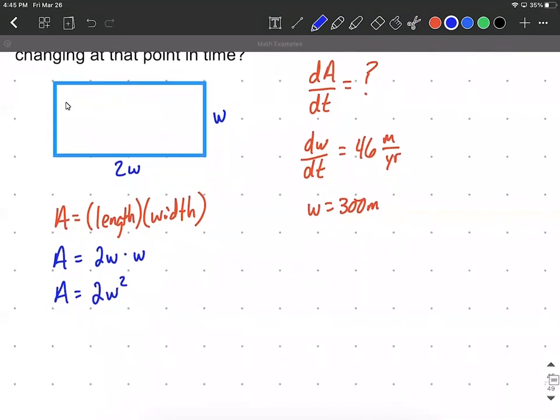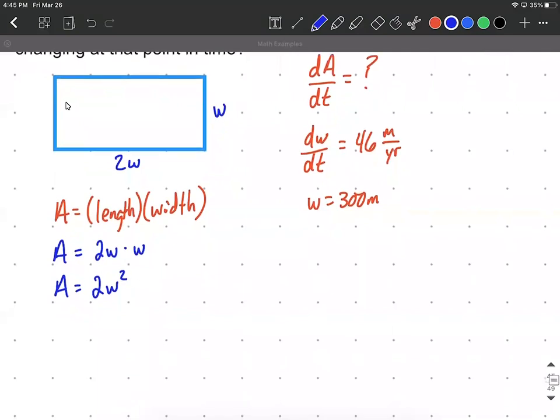All right, now we want to do implicit differentiation. We want to calculate dA/dt, so we're going to differentiate everything with respect to time. So we have dA/dt, the derivative of A would be 1, so 1 dA/dt is equal to, we'll bring our constant, the 2, along, and then the derivative of W squared is going to be 2W, but we just took the derivative of W with respect to time.